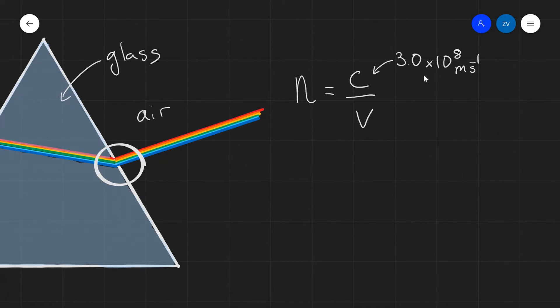Let's have a look at some common values of refractive indices. For instance, the refractive index of air is approximately 1.0. In reality, it is actually equal to 1.0003. However, for all practical purposes, we are always going to assume that the refractive index of air is just 1.